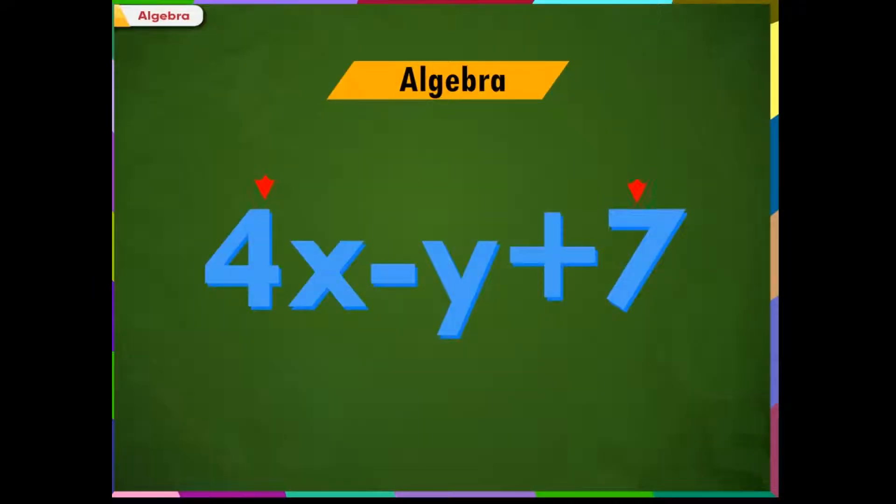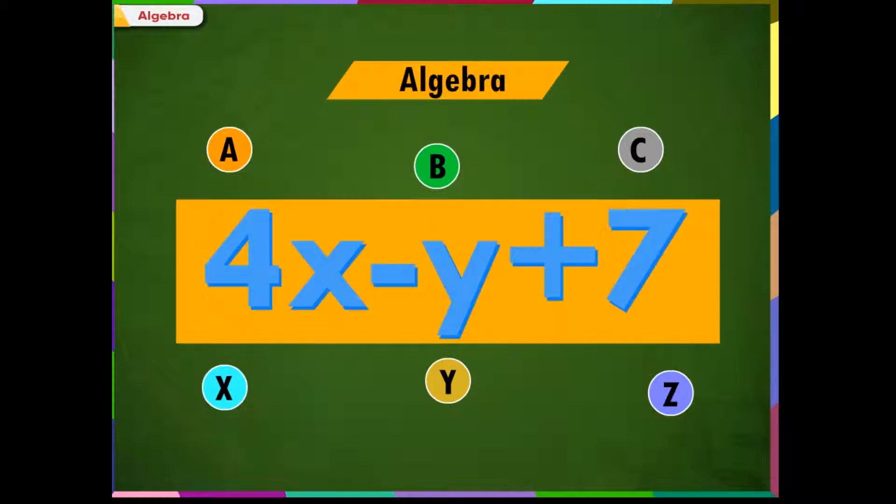Numbers, signs of operation along with alphabets. We can use any of the following alphabets: A, B, C or X, Y, Z. The most popular alphabet used in algebra is X. Let us see how we use all of these three things - that is numbers, operational signs and alphabets together.